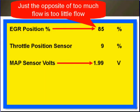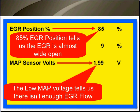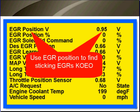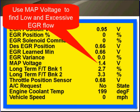Just the opposite of too much flow is too little flow. Eighty-five percent EGR position tells us that the EGR is almost wide open, but the low MAP voltage tells us there isn't enough EGR flow. Use the EGR position to find sticking EGRs with key on, engine off. Use variance to find sticking EGRs with the engine running. Use MAP voltage to find low and excessive EGR flow.